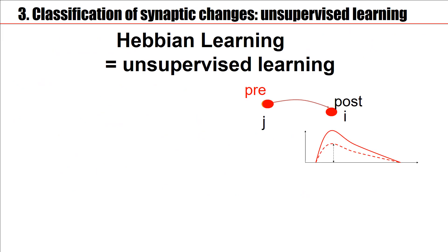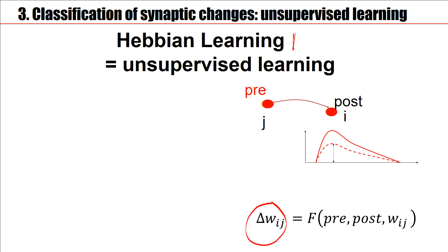A learning rule with two factors is Hebbian learning. It's essentially unsupervised learning. There is no notion of success, no notion of reward. The weight change depends on the state of the presynaptic neuron — spike arrival at the synapse — the state of the postsynaptic neuron, for example its spiking activity, and on the weight itself.